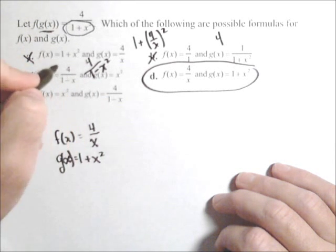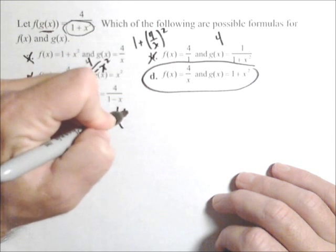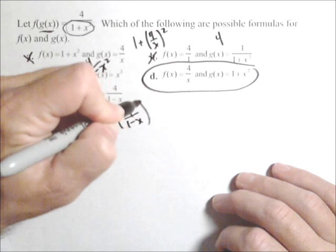And this one is similar to c, except it's backwards. So this would have come out to be four over one minus x, the quantity squared.